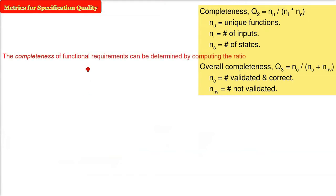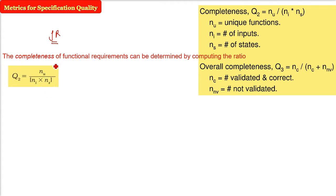For example, you might need to compute the completeness of functional requirement. There are functional requirements, non-functional requirements. So, we have functional requirements and we need to know the completeness. For that, we have this metric, nu by ni into ns.